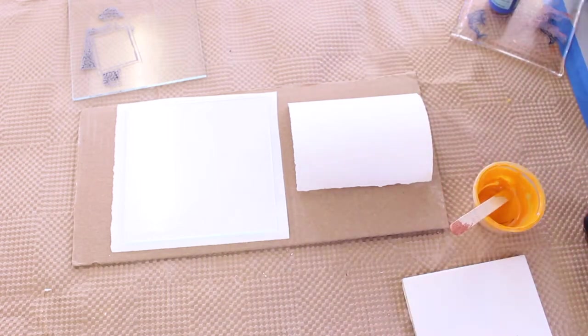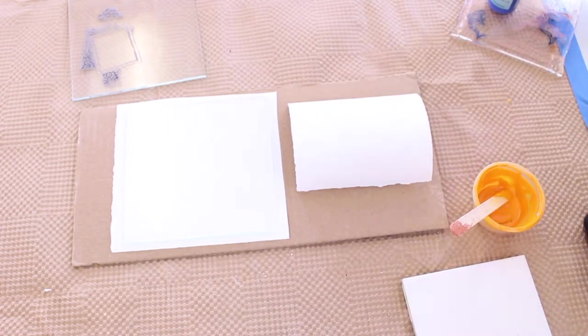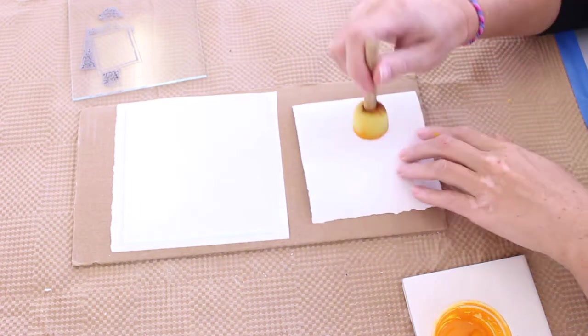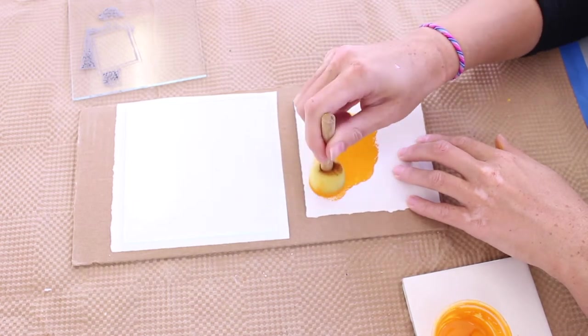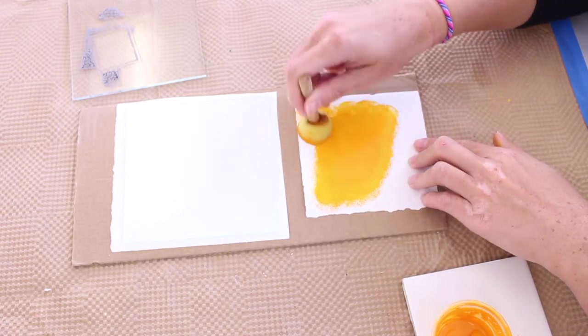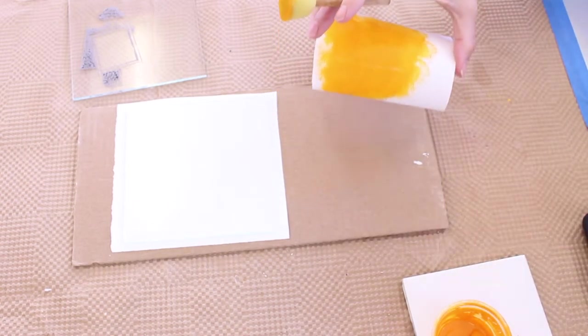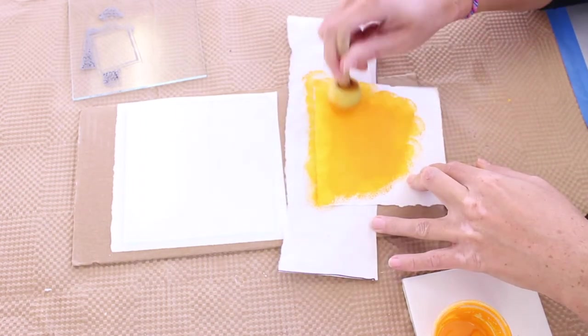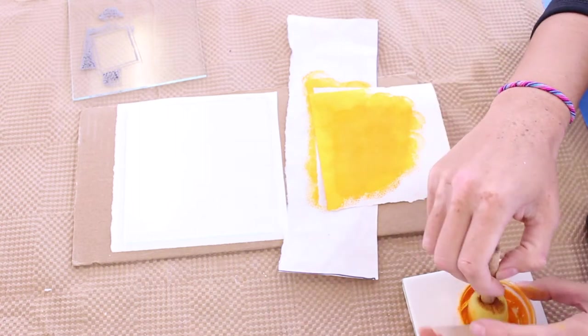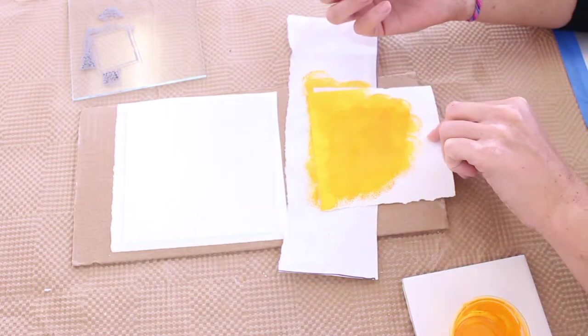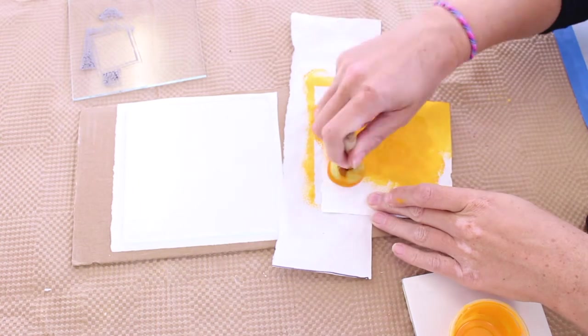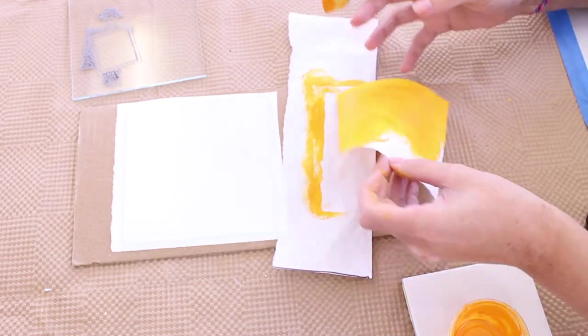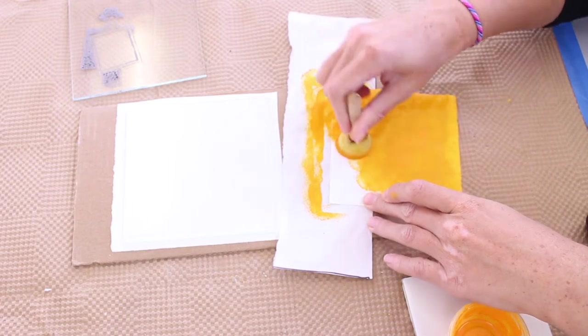I'll use my ponce to evenly distribute the enamel all over. This is my four and three quarters kiln paper, and I'm just going to cover it with a layer of the enamel.